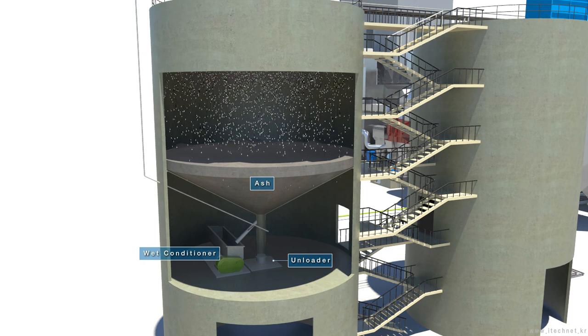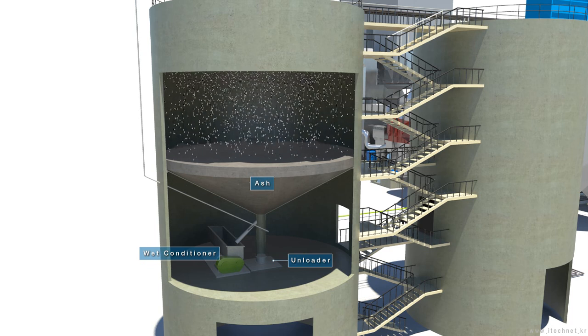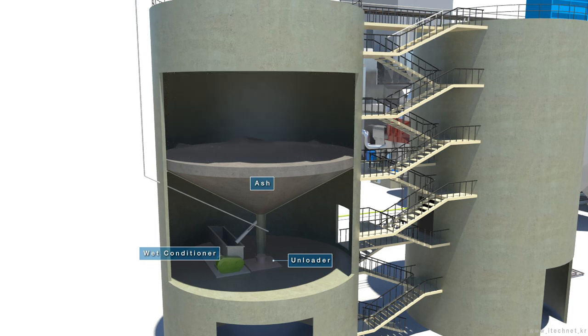Some ash is used as cement material after being dried at the dry unloader and delivered by trucks. Some is carried out as wet ash, which is mixed with service water at the wet conditioner.